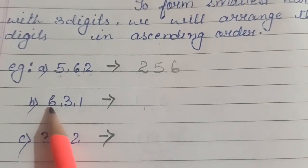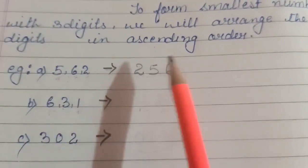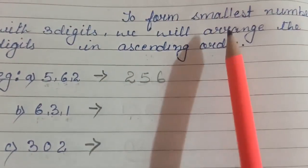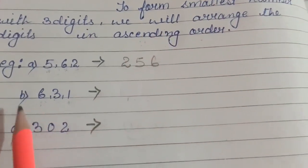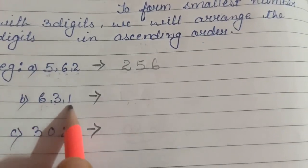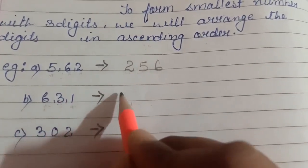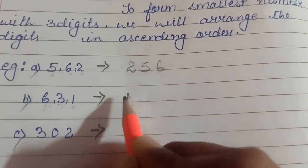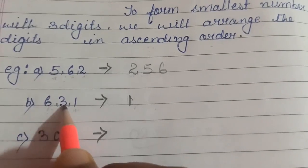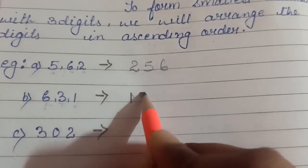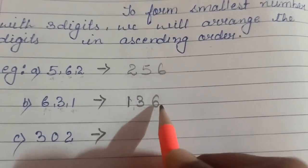Next example: the digits are 6, 3, and 1. We arrange them in ascending order to get the smallest number. One is smaller than 3 and smaller than 6, so we write 1 first. Then 3 is smaller than 6, so we write 3, and finally 6. So 136 is the smallest number.